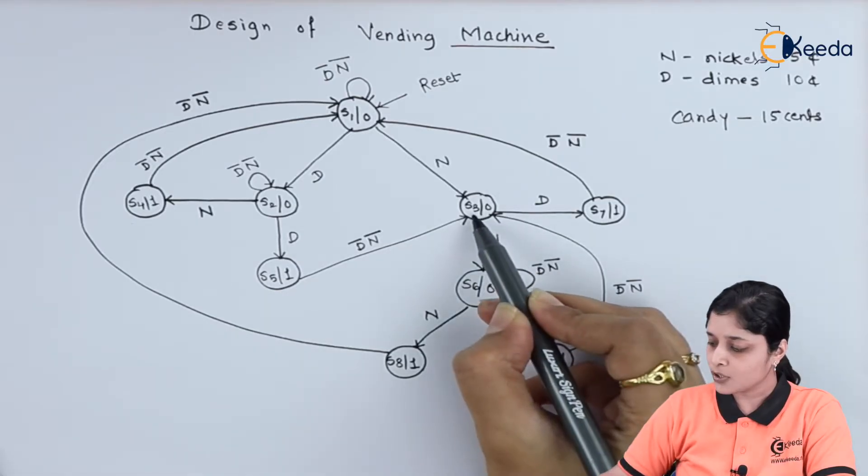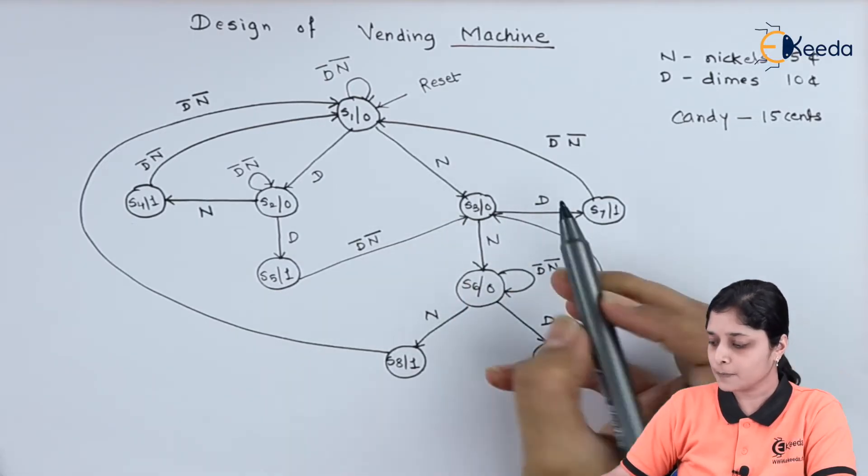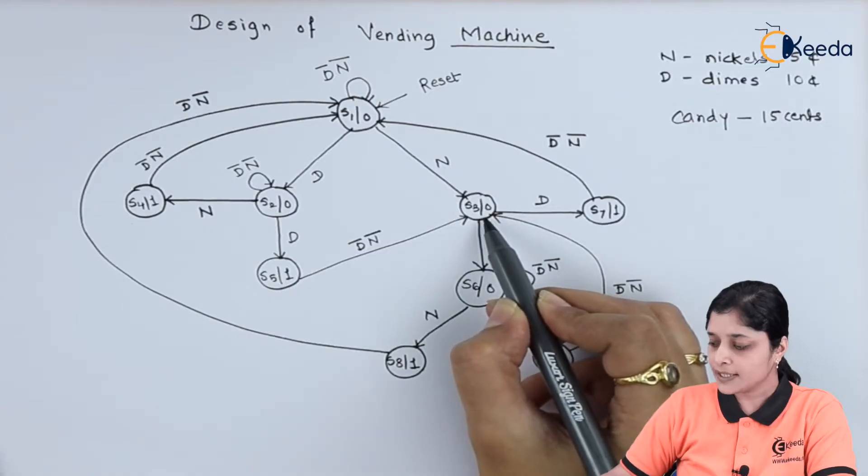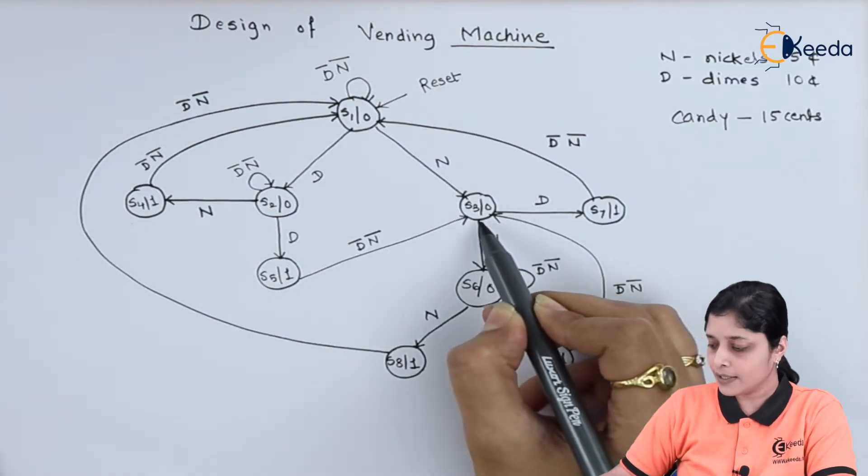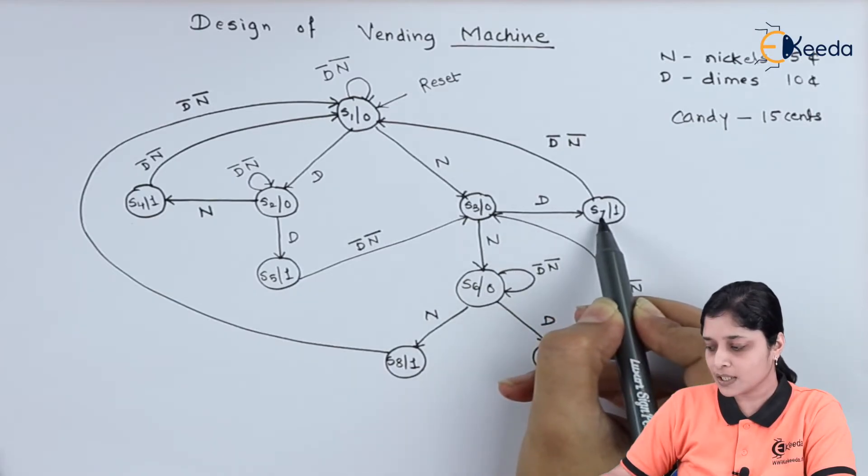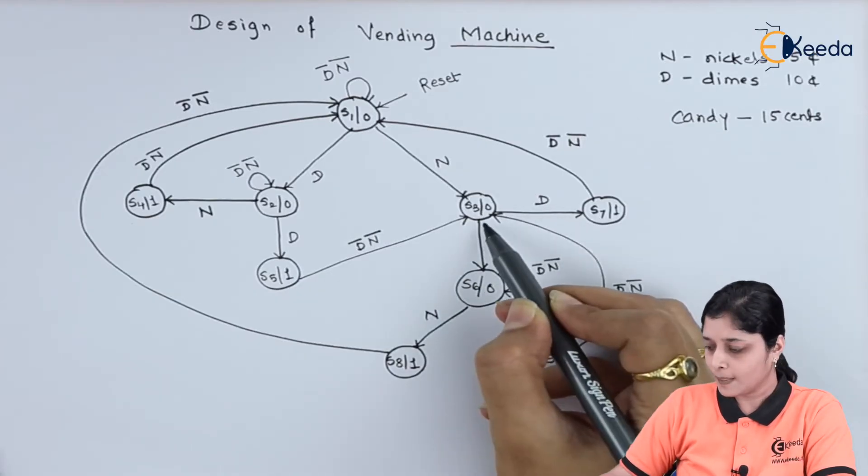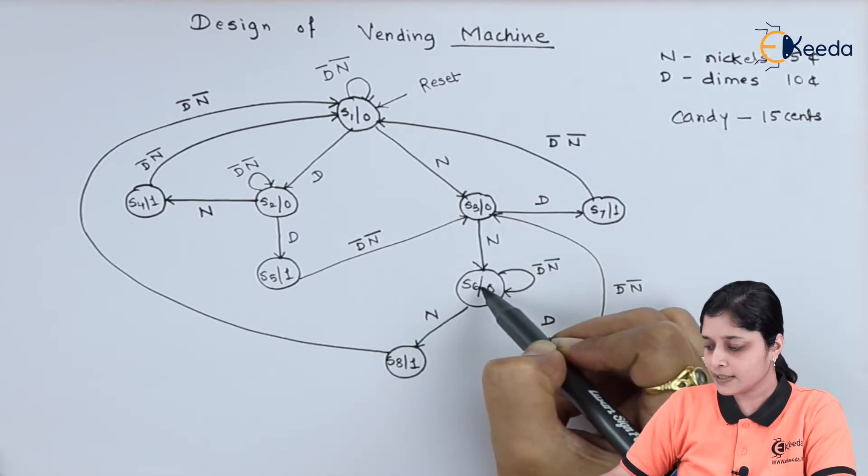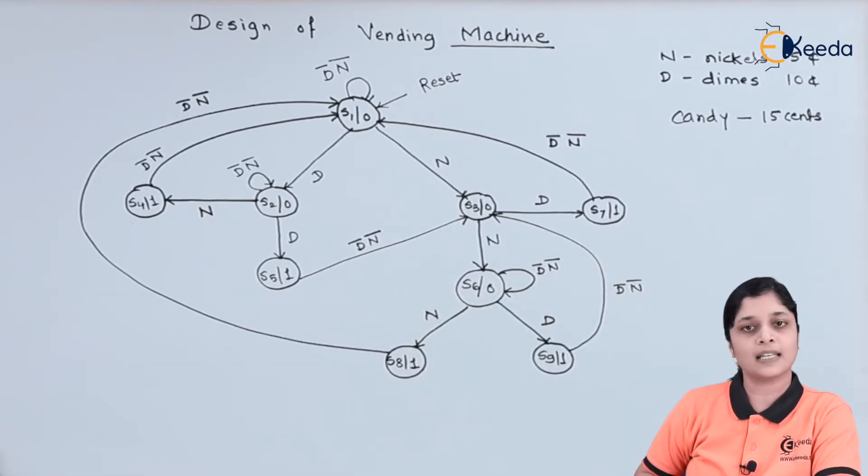For state S3, if nickel is inserted... now in this state S3, there are again chances that d, that is dime, is inserted, it will go to state S7. If nickel is inserted, it will go to state S6.